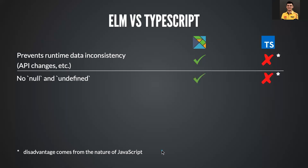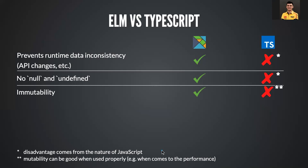There's also no concept of null or undefined in Elm, which of course exists in JavaScript and TypeScript — that's something TypeScript inherits from JavaScript. Immutability exists and is used in Elm but not enforced in TypeScript, though I wouldn't consider that a disadvantage because mutability can be both good and bad and when used properly should be fine. Also, if you want immutable data structures in JavaScript or TypeScript, you can use libraries for that — for example, Immer.